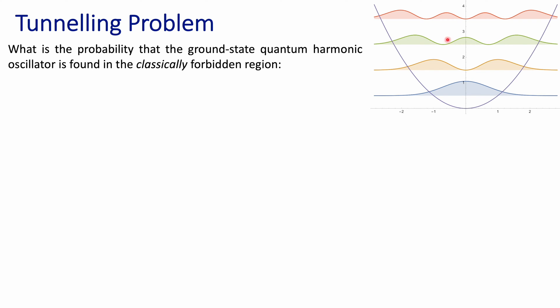For the second excited state, even longer — so the vibration is going to be stretching and compressing even more because, again, more energy, and so on and so forth. The physical distance between those turning points is going to be larger as the principal quantum number goes higher. Larger energy for your system means that stretching and compressing can be of larger magnitude as well.